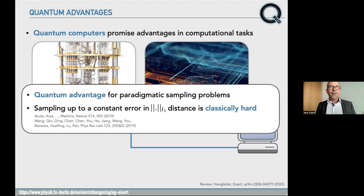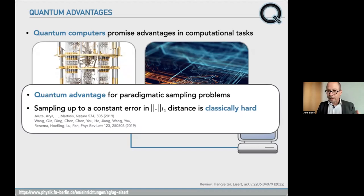Every native problem in quantum mechanics is at the end of the day a sampling problem — when you go into the lab and natively take data in an experiment, you're performing some sort of sampling experiment. It turns out there are finely engineered sampling experiments that you can do in labs, but you cannot produce samples from the same distribution classically — sampling up to a distribution that's close in the L1 distance sense is classically hard under mathematically very plausible assumptions. And these experiments have been done to spectacular attention.